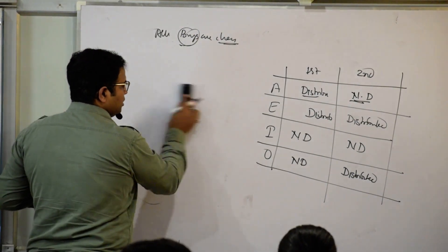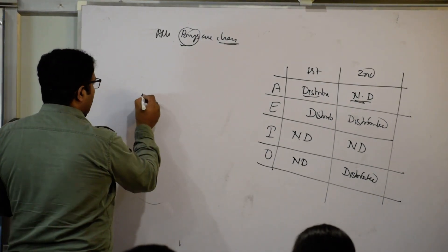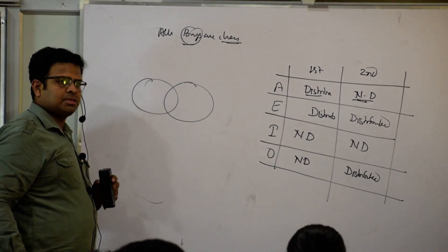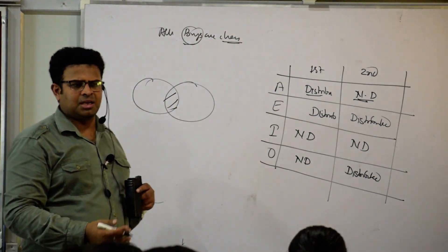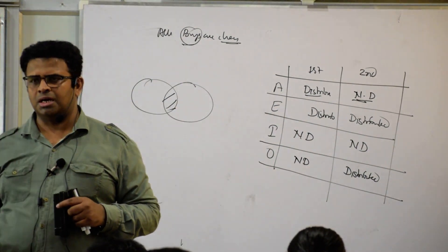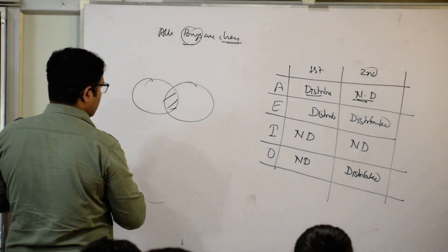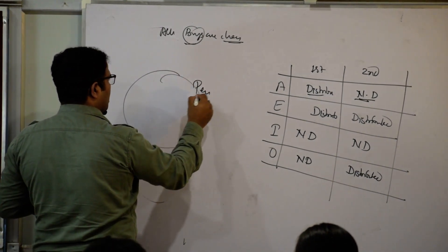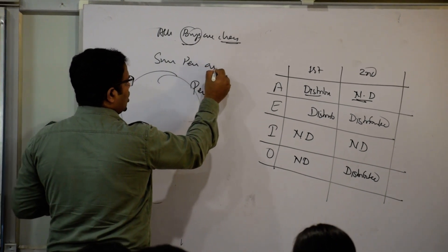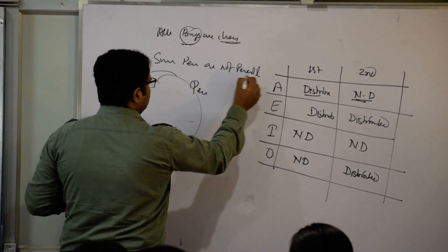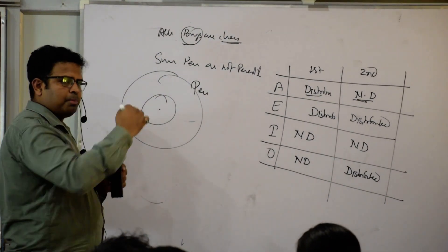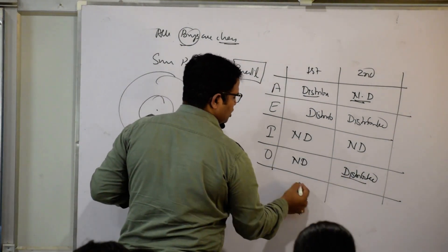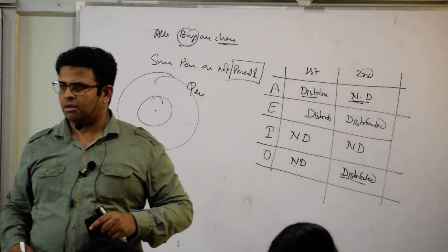In case of I, both terms are not distributed. In case of O — some pens are not pencils — pencil comes inside and is completely distributed in the pen. So in case of O, the second term is always distributed and the first term is not distributed.